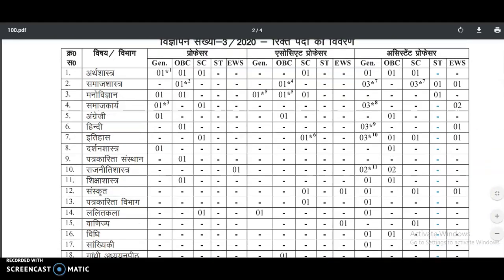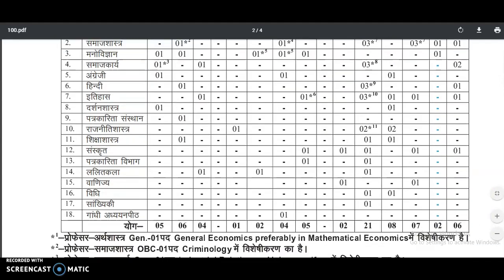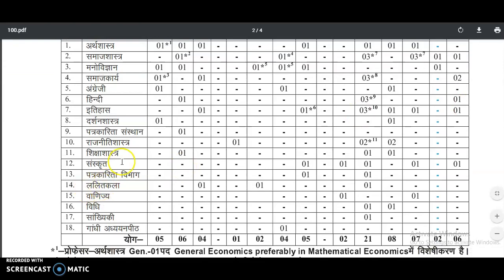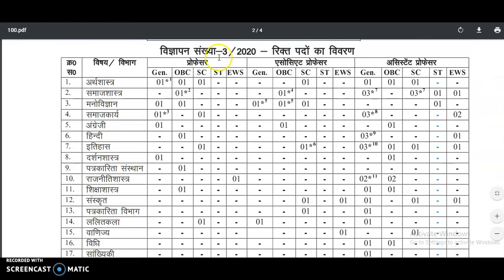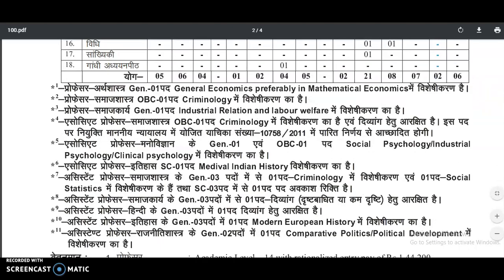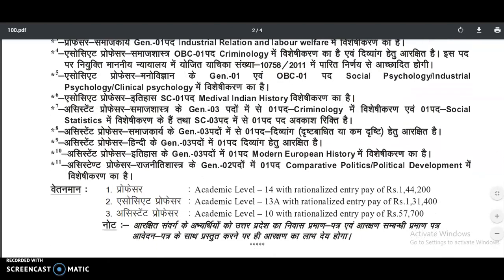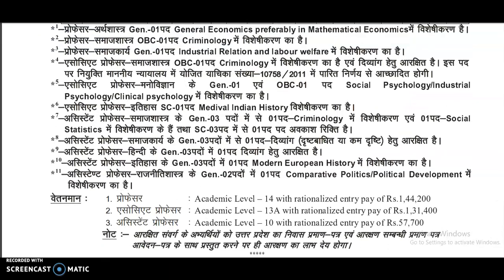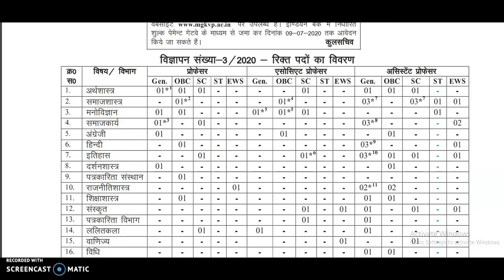You can check in this table that there are a total of 18 departments, which are mentioned here. For each department, based on caste category and designation, the number of posts are also mentioned. The designations include Professor, Associate Professor, and Assistant Professor.